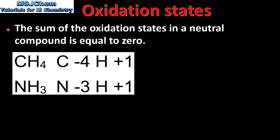The next rule: the sum of the oxidation states in a neutral compound is equal to 0. Both CH₄ (methane) and NH₃ (ammonia) are neutral compounds. In methane, the carbon has an oxidation state of negative 4 and the hydrogen has an oxidation state of plus 1 — the plus 1 on the 4 hydrogens cancels out the negative 4 on the carbon, so the sum equals 0. In ammonia, the plus 1 on the 3 hydrogens cancels out the negative 3 on the nitrogen, so the sum also equals 0.